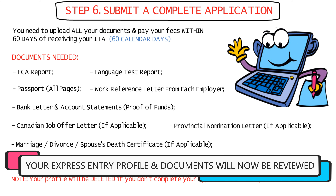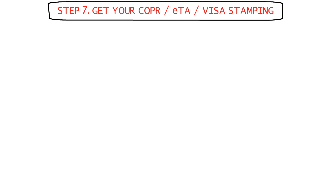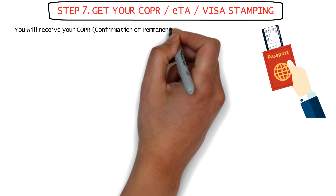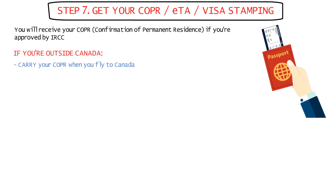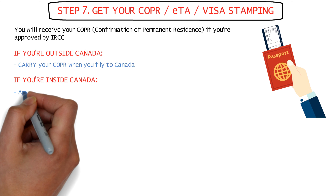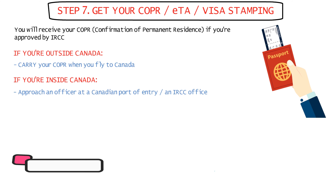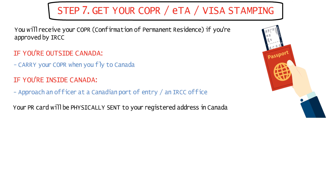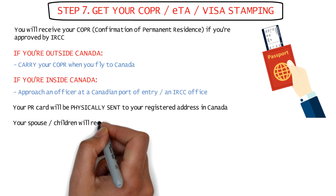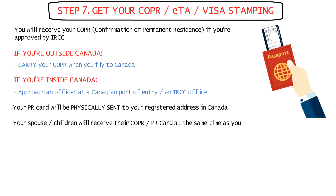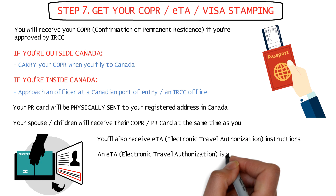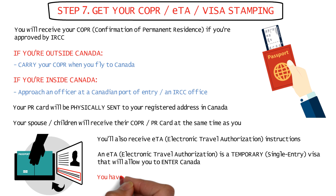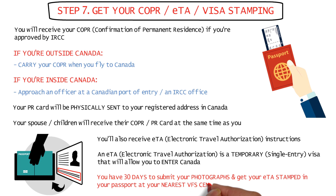After you submit your complete application, it'll be reviewed by IRCC. Immigration officers will assess the information and documents you've provided, and you'll receive your COPR or Confirmation of Permanent Residence document if you're approved. If you're outside Canada you have to carry the COPR document when you fly to Canada; if you're already inside Canada on a work permit or student visa, you can approach an officer at a Canadian port of entry or an IRCC office to get it signed and dated. Your PR card will be physically mailed to your registered address in Canada on a later date. Along with your COPR, you'll also receive a confirmation email from IRCC for your ETA or Electronic Travel Authorization, and you'll get 30 days to submit your photographs and get this ETA visa stamped in your passport at your nearest VFS centre.